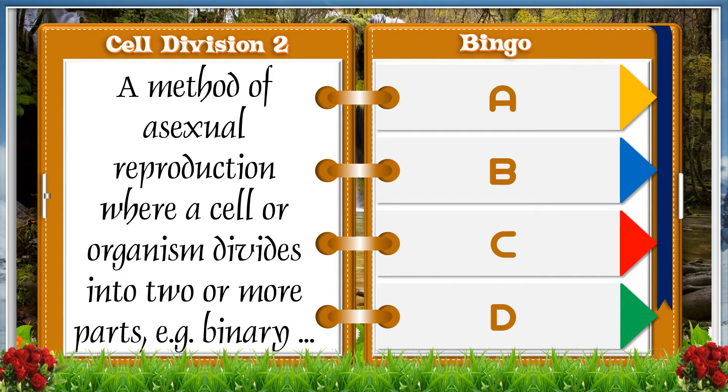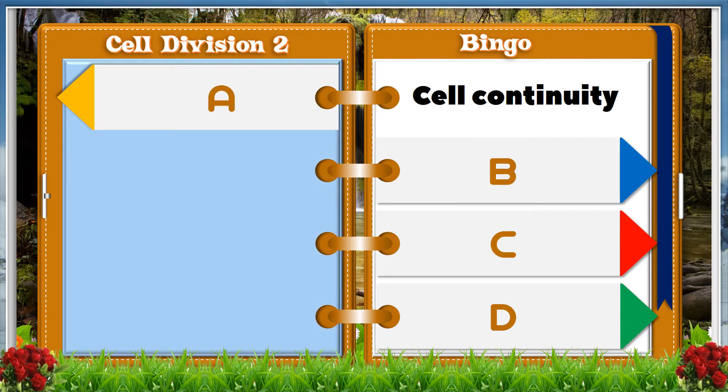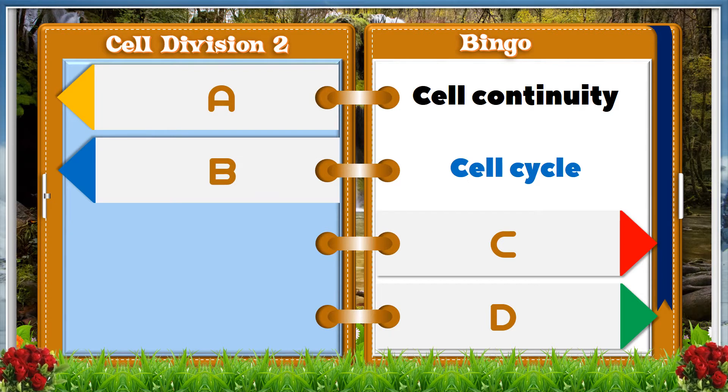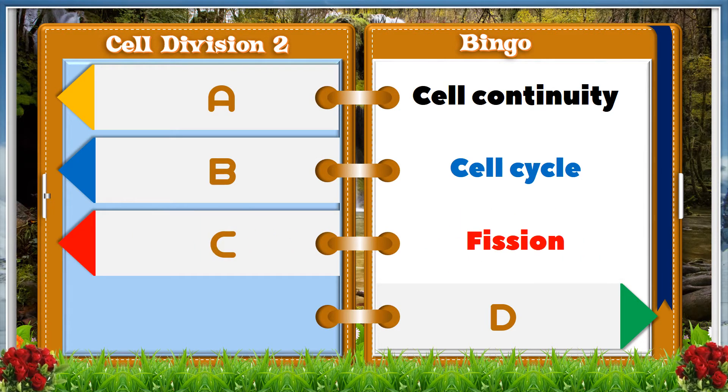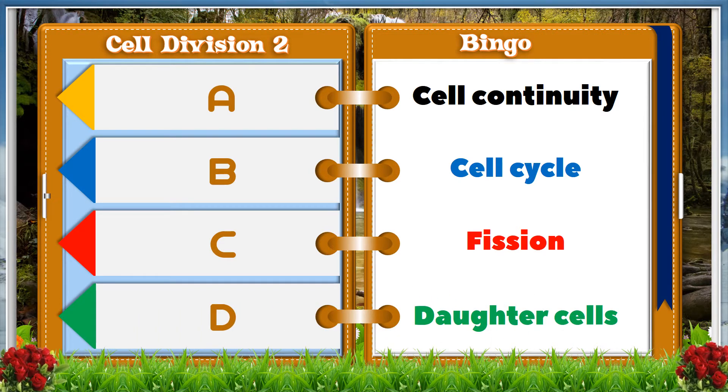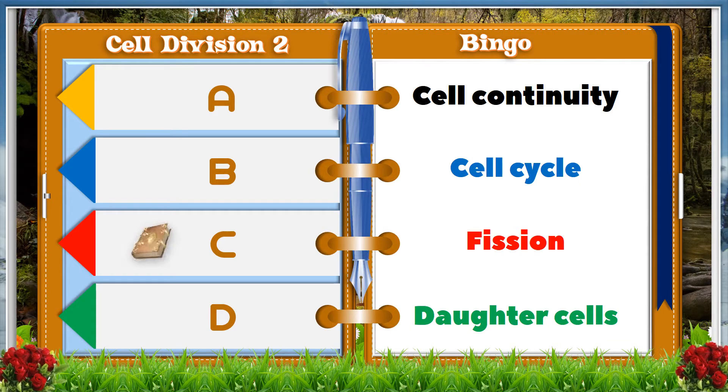A method of asexual reproduction where a cell or organism divides into two or more parts. A: binary, B: cell continuity, C: cell cycle, D: fission, E: daughter cells. And the answer is C, fission.